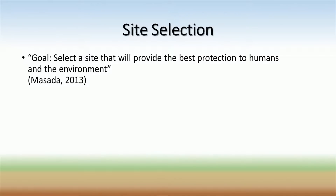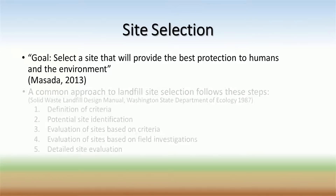A common approach to site selection follows five main steps. First, a definition of the site criteria is developed, then potential sites are identified. An evaluation of the potential sites is done based on the defined criteria, followed by an evaluation of the sites based on field investigations, and then a final detailed site evaluation.